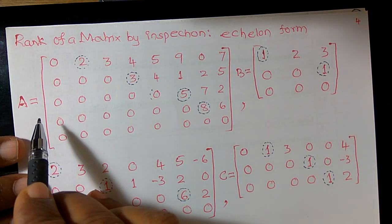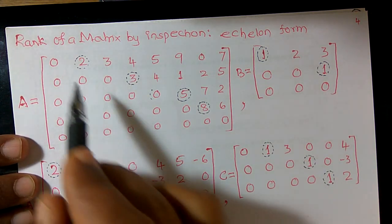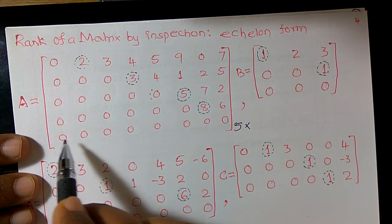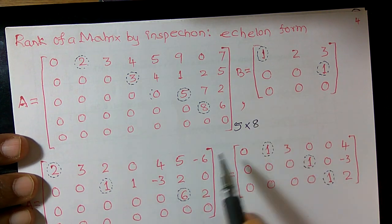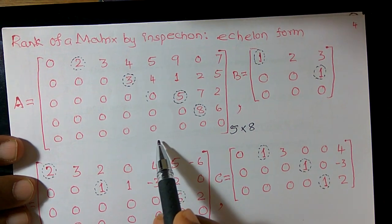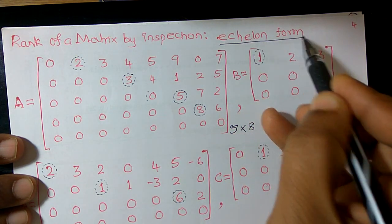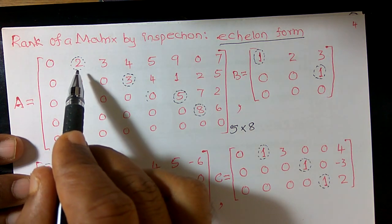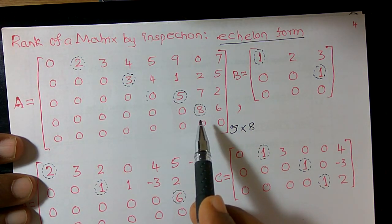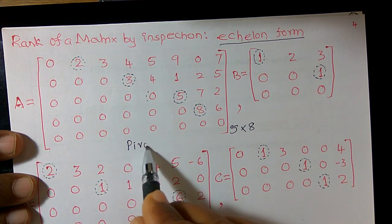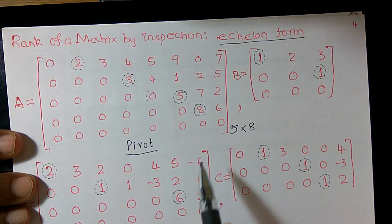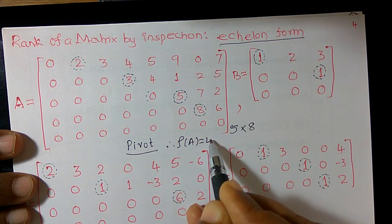Now consider a 5 cross 8 matrix in echelon form. We call this the echelon form of a matrix. You can observe the leading numbers — called pivot elements: 2, 3, 5, and 8 are the leading or pivot elements. There are 4 pivot elements. Therefore, the rank of this matrix is equal to 4.